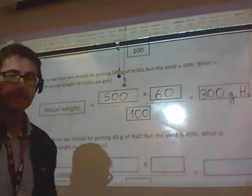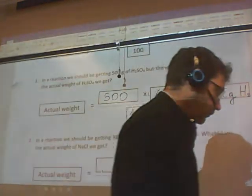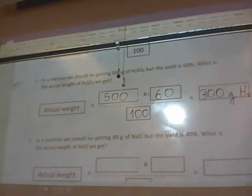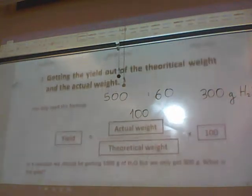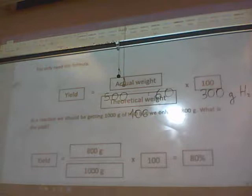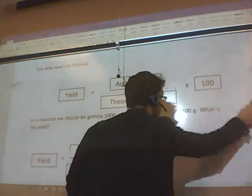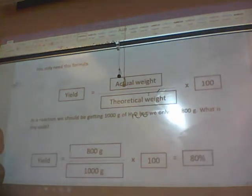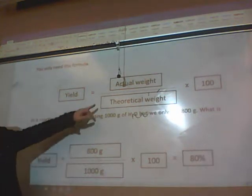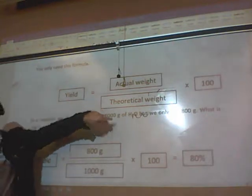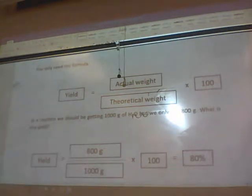I'm gonna do the other one. Okay, the other thing in this worksheet is calculating the yield having the actual weight and the theoretical weight. So the only thing you've got to do is calculate the percentage: that is the actual weight divided by the theoretical weight and you multiply that by a hundred to get a percentage.